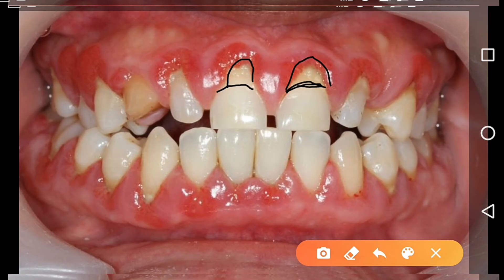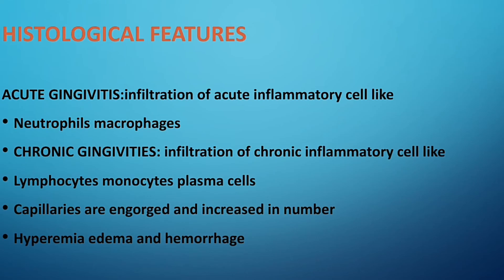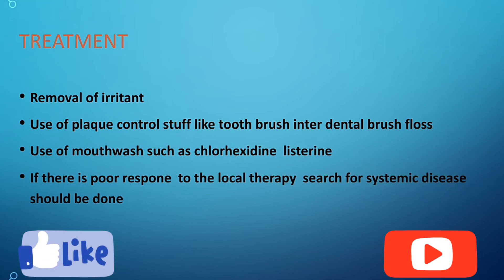Now let's look at the histological features of gingivitis. In acute gingivitis, there is infiltration of acute inflammatory cells such as neutrophils and macrophages, which you can see under the microscope. In chronic gingivitis, there is infiltration of chronic inflammatory cells like lymphocytes, monocytes, and plasma cells — when acute inflammation persists for a longer duration, it becomes chronic. Capillaries are engorged and increased in number, which is why the gingiva becomes swollen, with hyperemia, edema, and hemorrhage.